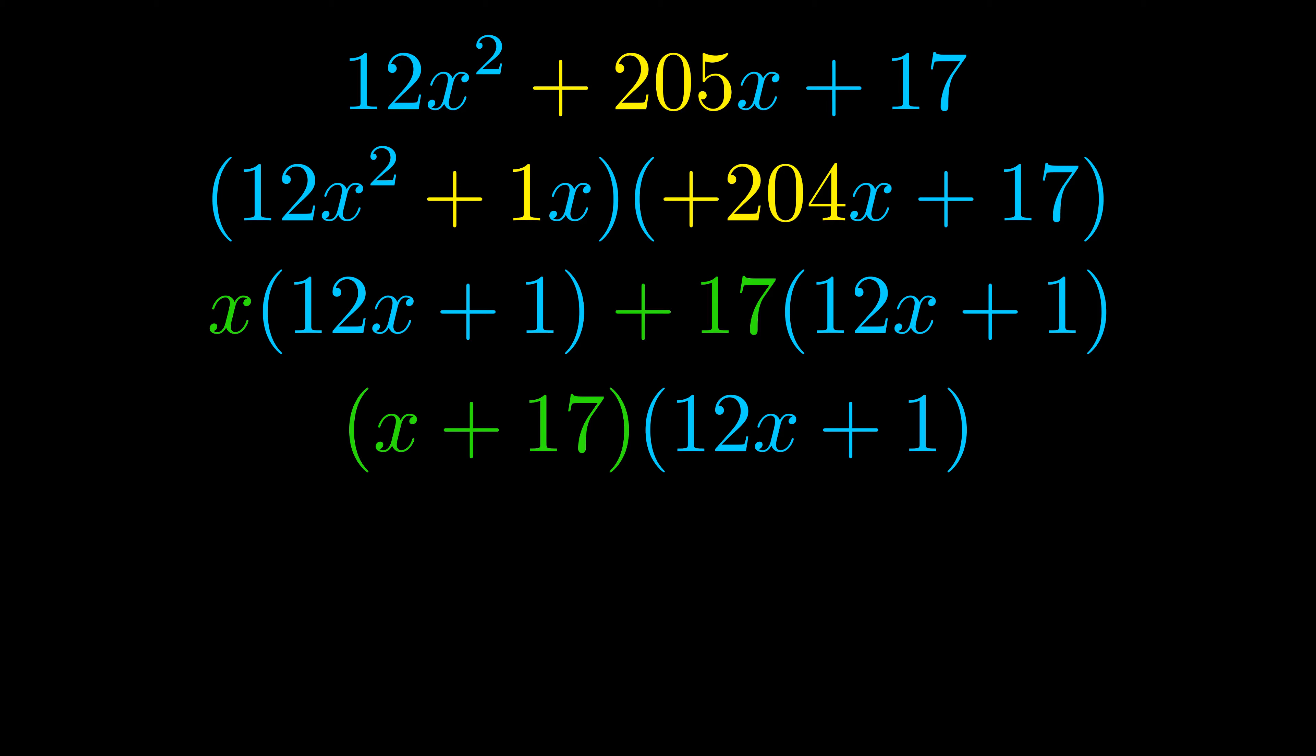Those blue values will become one of our factors and we will combine the two green values, the GCFs that we pulled out, to get the other one. And that is our fully factored equation.